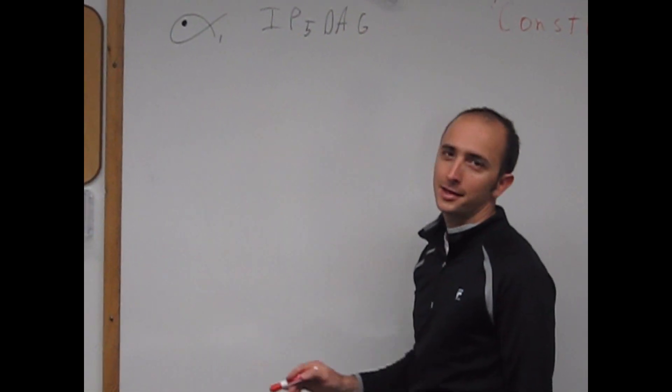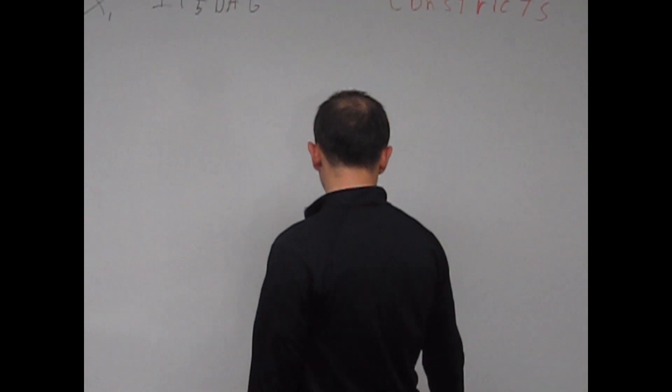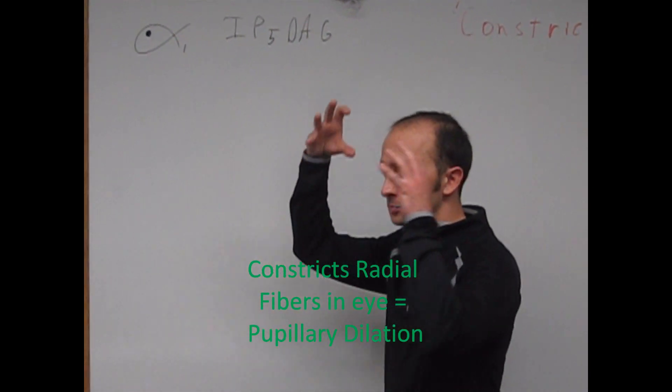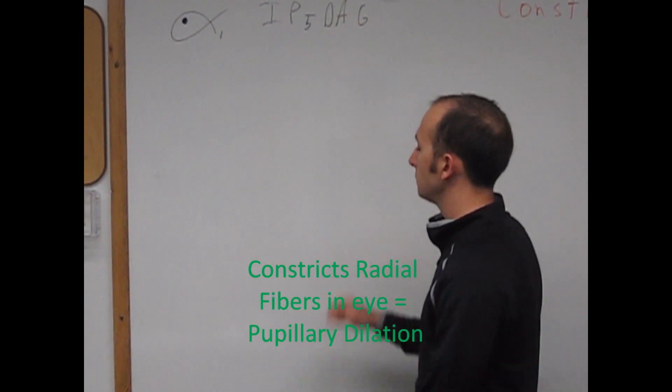You might say, well, you just told me the eye gets bigger. But even in the eye, you're actually constricting the dilator pupillary muscle. You're constricting the radial fibers, and that's what's pulling the pupil through. What else does it constrict?